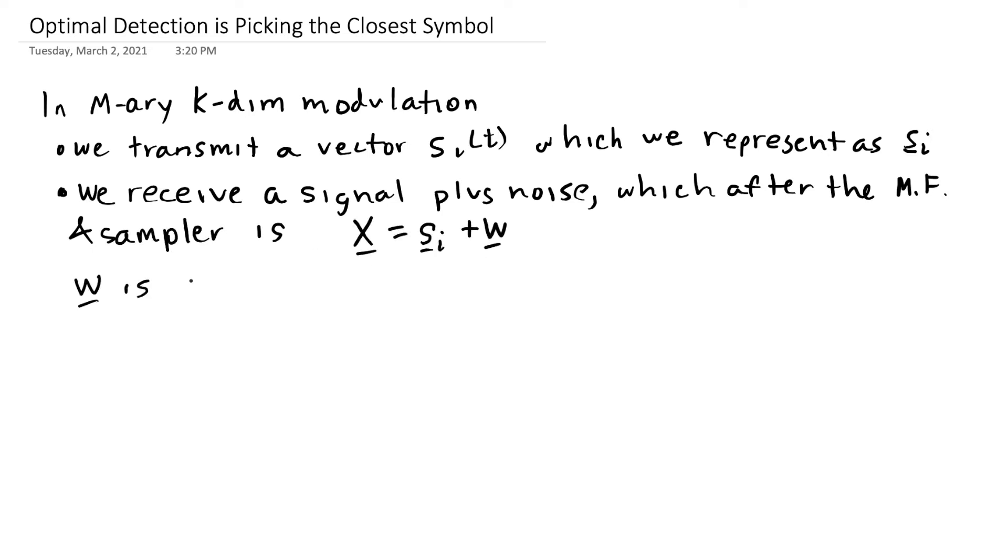For multivariate zero-mean Gaussian random vector W, which represents our noise after the match filter, it has independent Gaussian components, each with variance sigma W squared.